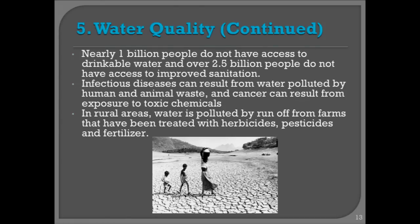Nearly a billion people do not have access to drinkable water, and over two and a half billion people don't have access to improved sanitation. This is a large portion of the planet. Infectious diseases can result from water polluted by human and animal waste, and cancer can result from toxic chemicals. We're seeing more of this in the developing world as industrial practices pay no attention to the effluent coming out of factory pipelines. In rural areas, water is also being polluted by runoff from farms treated with herbicides, pesticides, and fertilizer — all of which you can control with different technologies.